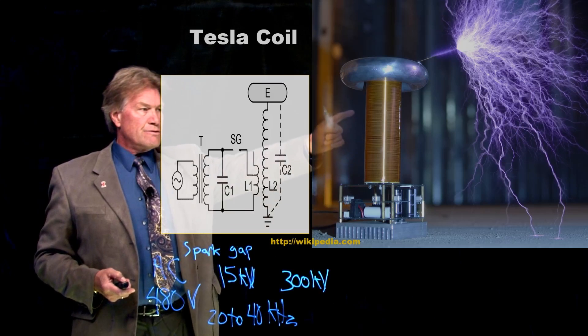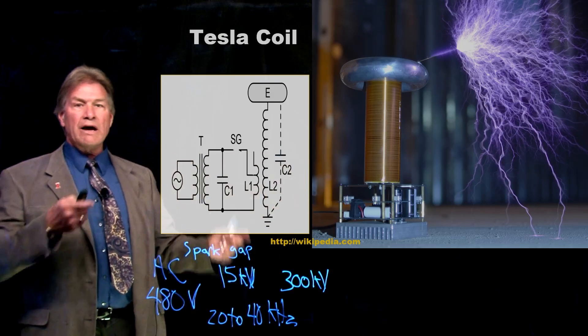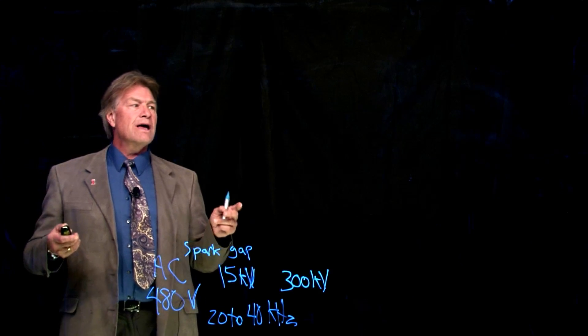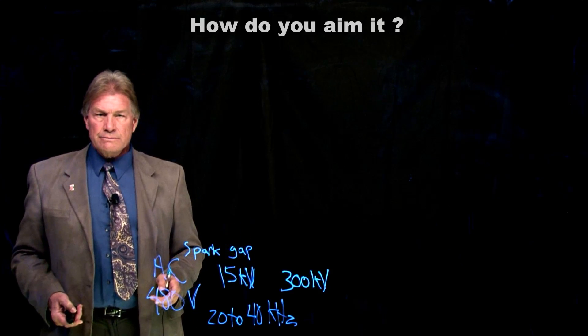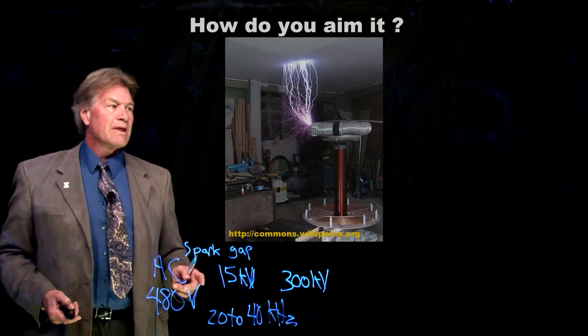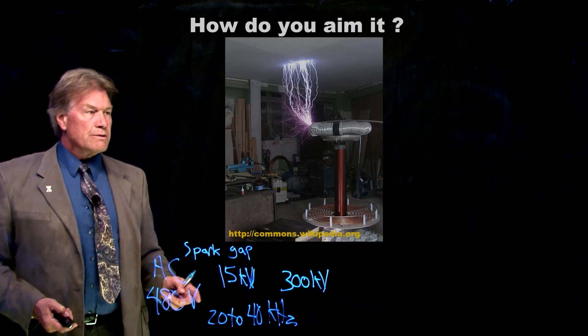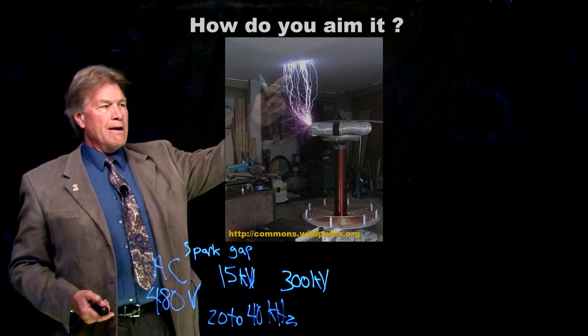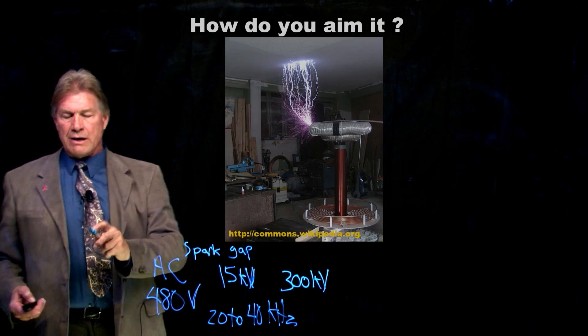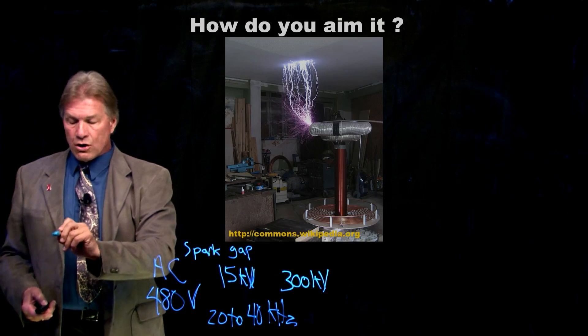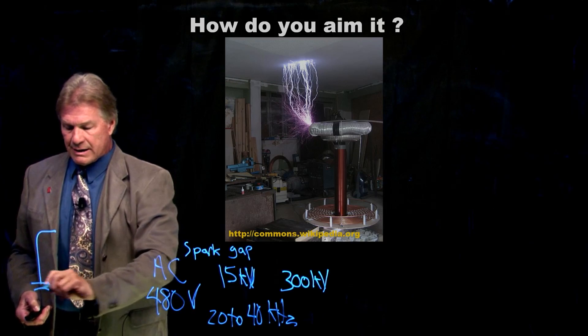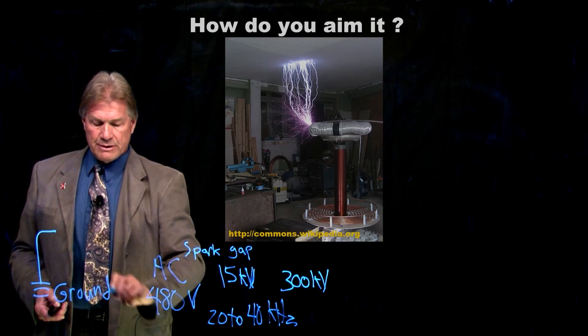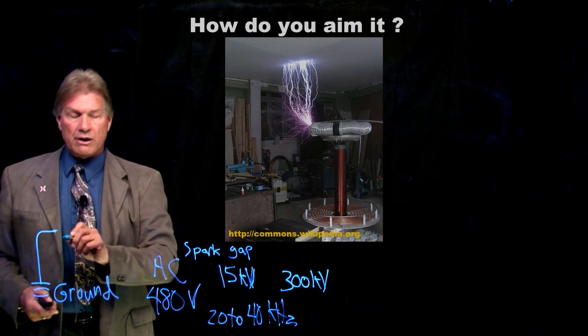But this didn't shoot anything. It just kind of went everywhere. So how do you aim the Tesla coil? Well, if you don't, it just goes to the nearest object. The nearest object with ground behind it. Somewhere there's a girder that ends up being connected to literally the ground, a pipe into the ground, something that can dissipate all that charge away.